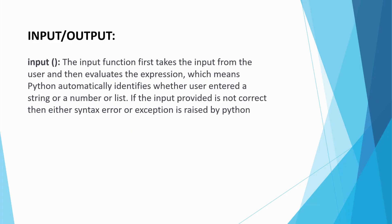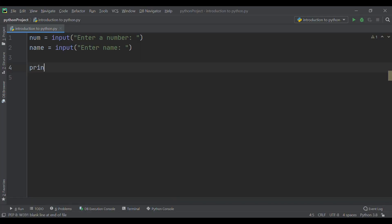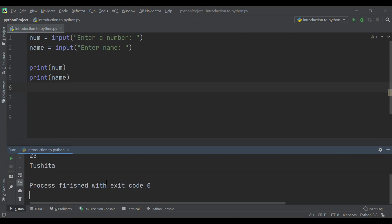The simplest way to produce output is by using the print function. This function converts the expression you pass into a string before writing to the screen. Let us print the values we had taken from the user. The output appears on the screen as the values we had taken from the user.